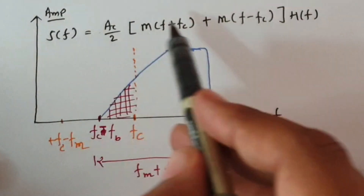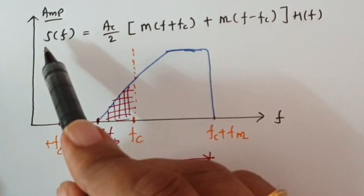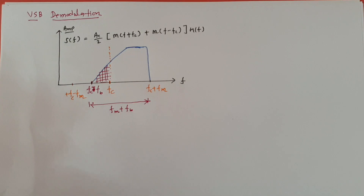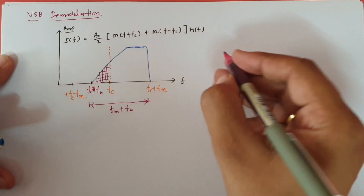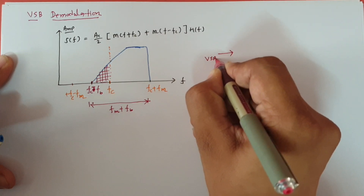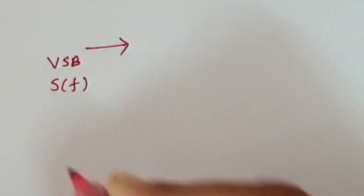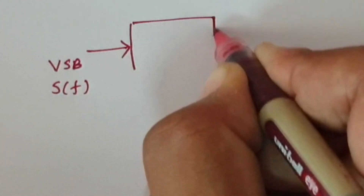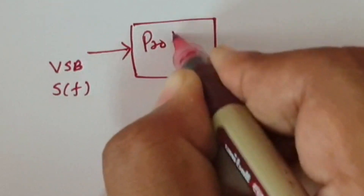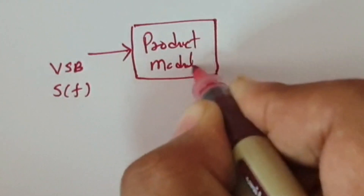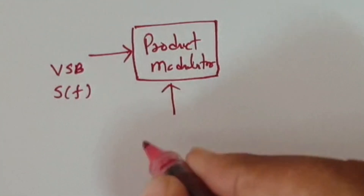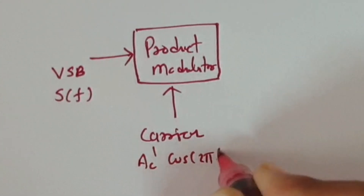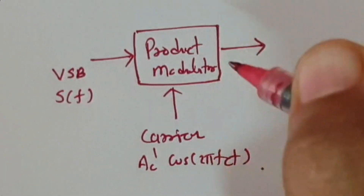Our agenda is to detect that modulating signal which is there in this modulated signal. We will do this step by step. We have a VSB signal S(F) in frequency domain and S(T) in time domain. First, we give it to a product modulator, and the second input to the product modulator is the carrier signal: AC' cos(2π FC t).